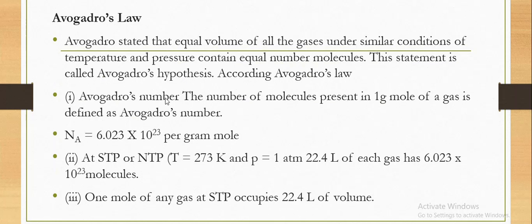Now, Avogadro's law. Avogadro stated that equal volumes of all gases under similar conditions of temperature and pressure contain equal number of molecules. This statement is called Avogadro's hypothesis. According to Avogadro's law, the number of molecules present in 1 gram mole of a gas is defined as Avogadro's number: Nₐ = 6.023 × 10²³ per gram mole.